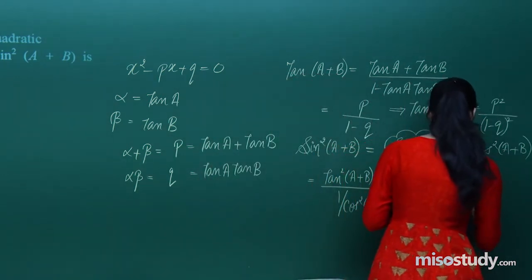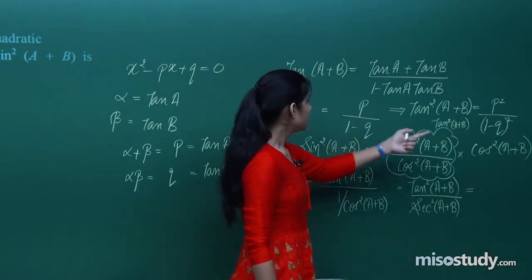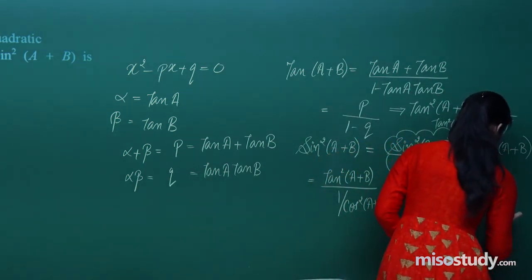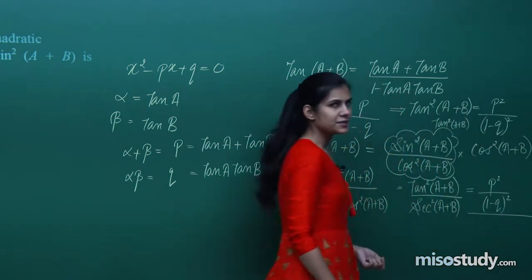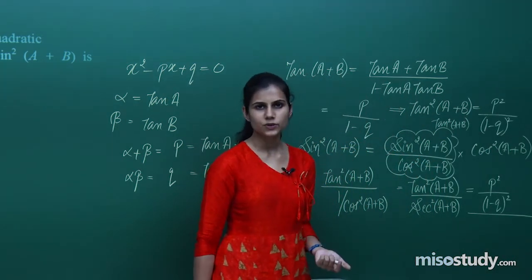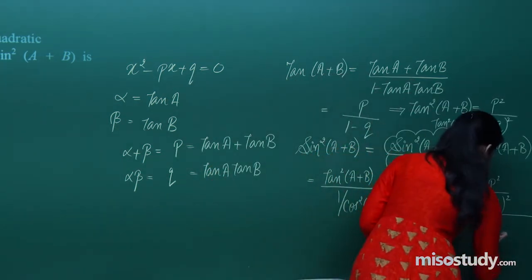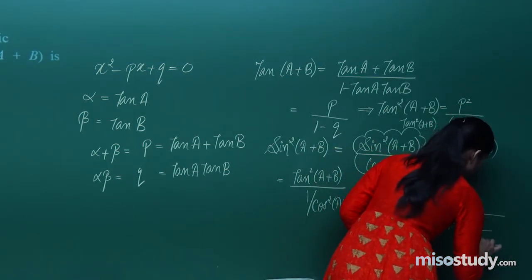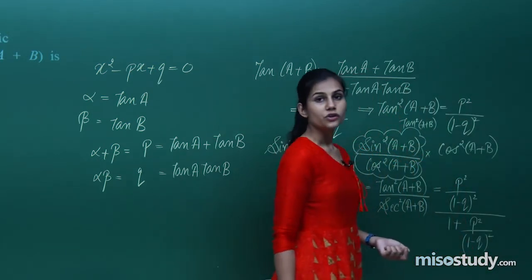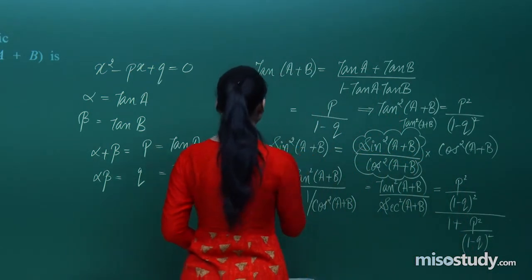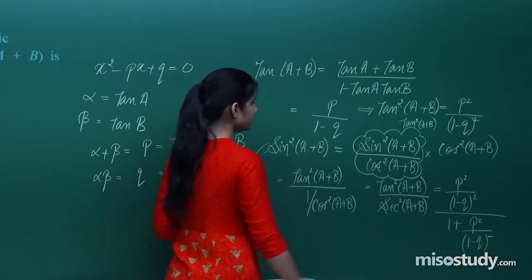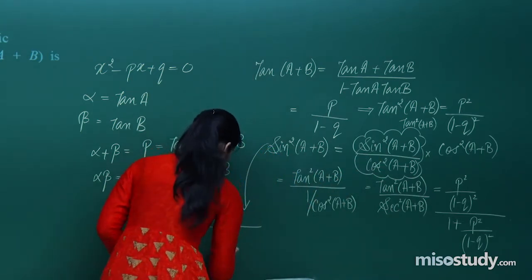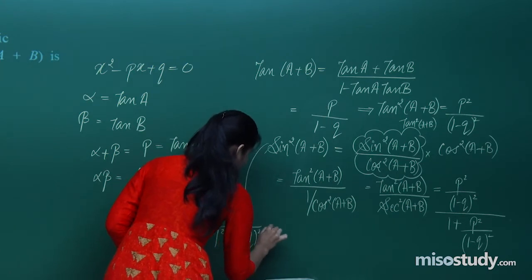Now tan²(a+b) = p² / (1-q)². Since sec²(a+b) = 1 + tan²(a+b) = 1 + p²/(1-q)², the answer is: sin²(a+b) = p² / [p² + (1-q)²].